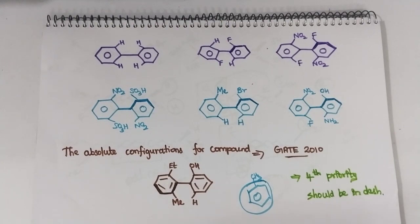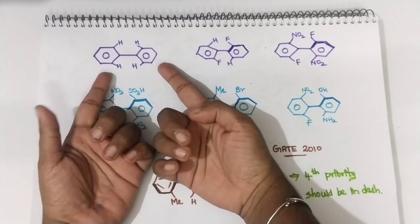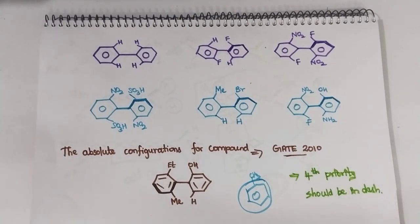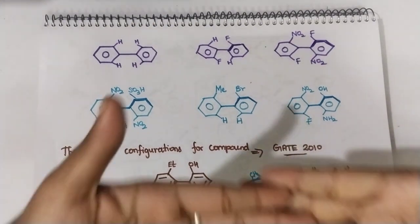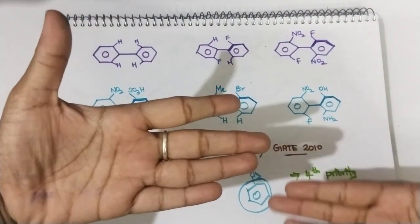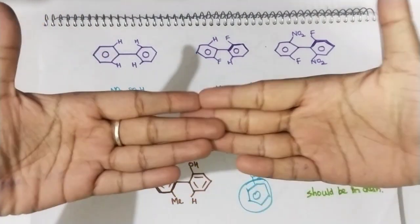Biphenyl means you have two phenyl groups. This is one phenyl group and this is another phenyl group. You have to know the basics. To be optically active, biphenyls should have bulkier groups. Consider this as biphenyl — this is one ring and another one is this.